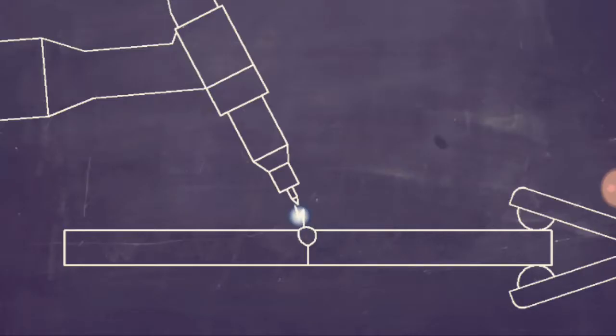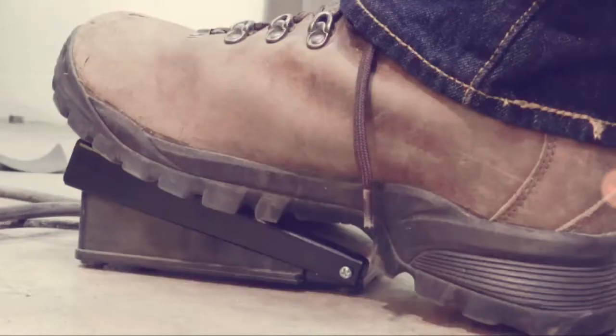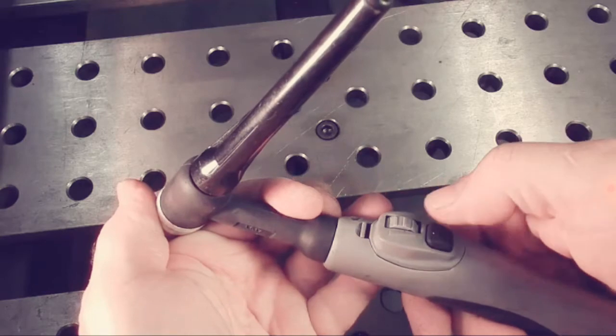TIG works by melting the base metal, and that is, the metal that makes up the two pieces that are to be joined. The heat is generated by an electric arc that forms between the base metal and the tungsten electrode. You can control the amount of heat with a foot pedal or with a thumb wheel on the torch.